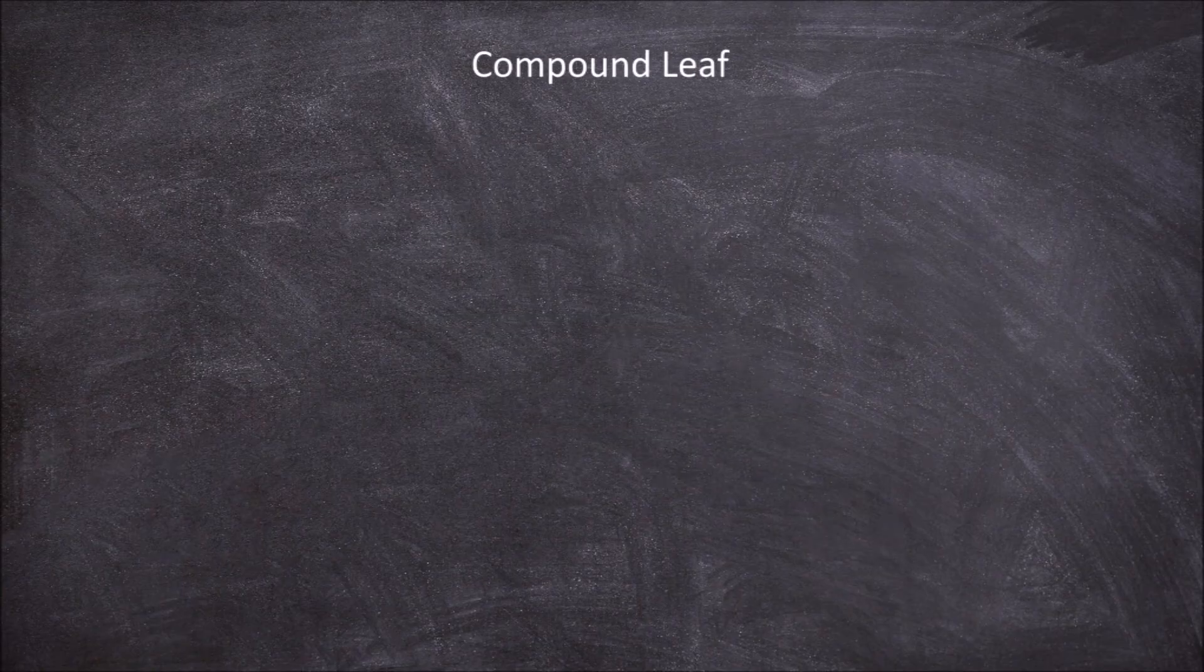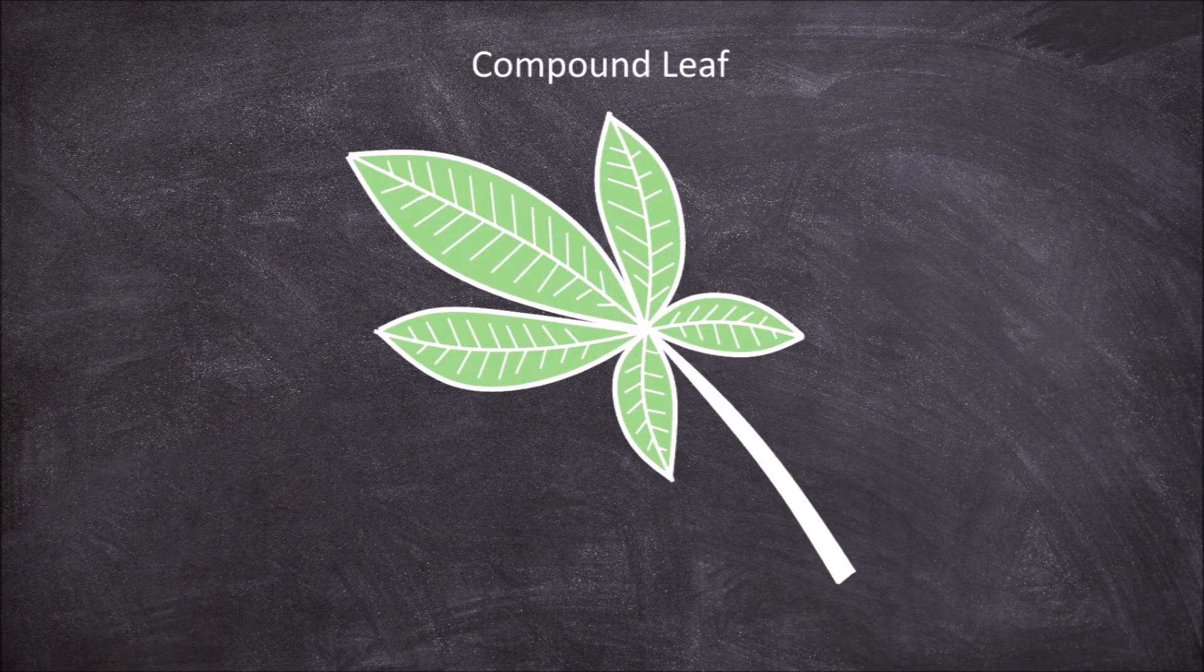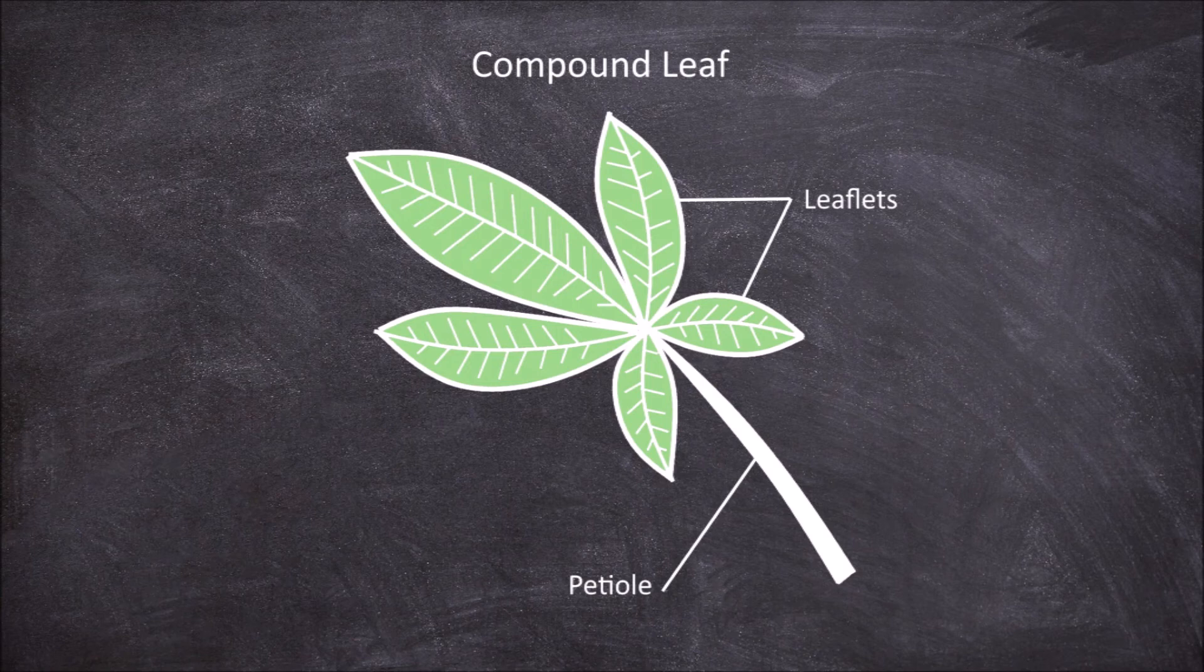These blades are called leaflets. A compound leaf can have a palmate pattern where all leaflets grow from the tip of the petiole. These are called palmate compound leaves.